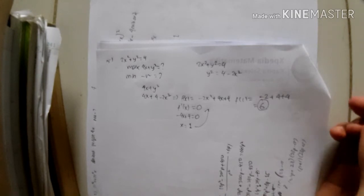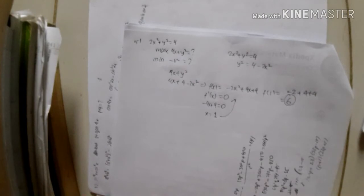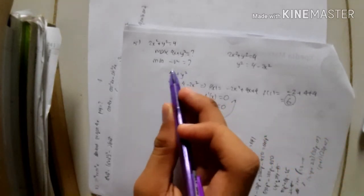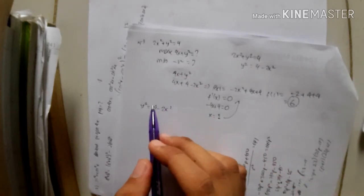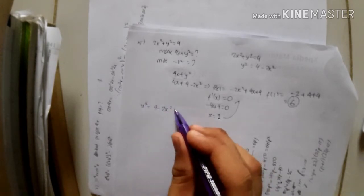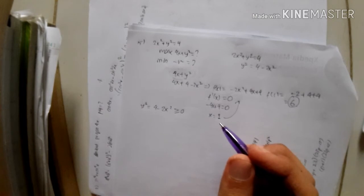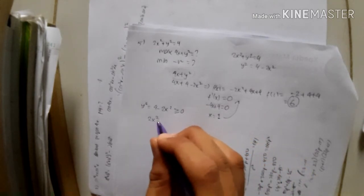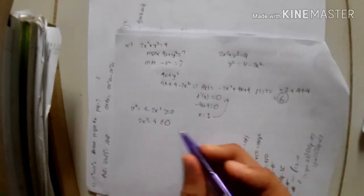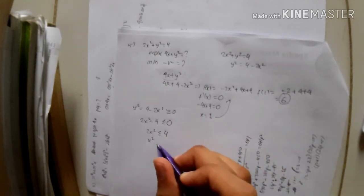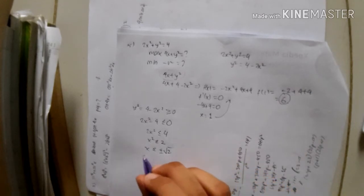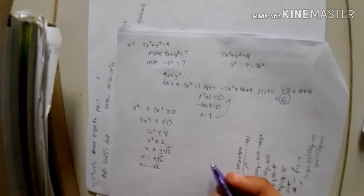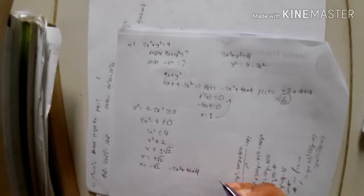Now how to find the minimum value — this is actually a bit tricky. We have the function 4x + y², and y² = 4 - 2x². For y² to be valid, it must be greater than or equal to zero. So 4 - 2x² ≥ 0, which gives x² ≤ 2, meaning x is either +√2 or -√2. We substitute both into -2x² + 4x + 4 to find which gives the smaller value.